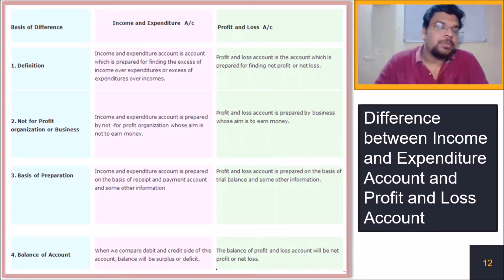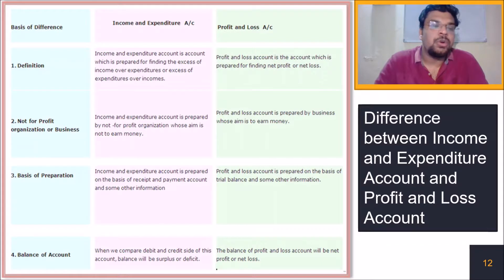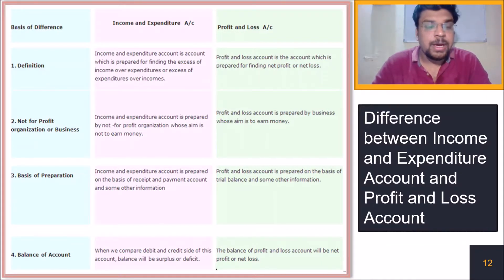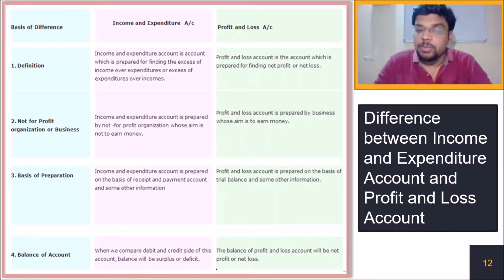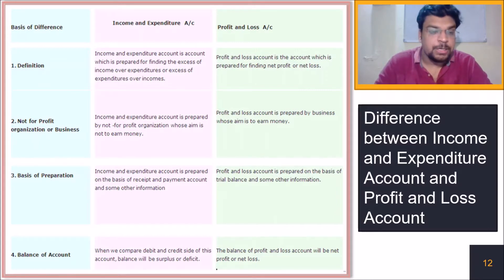The second basis of difference is: not-for-profit organization or business. The income and expenditure account is prepared by NPOs whose aim is not to earn money, and the profit and loss account is prepared by business firms whose aim is to earn money.